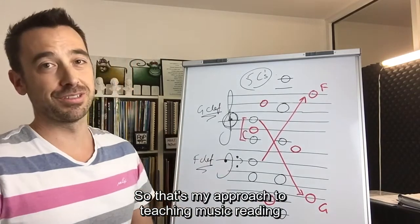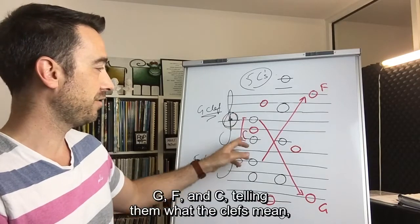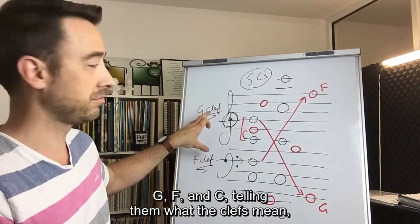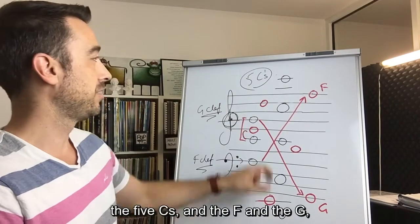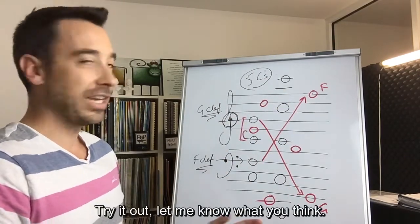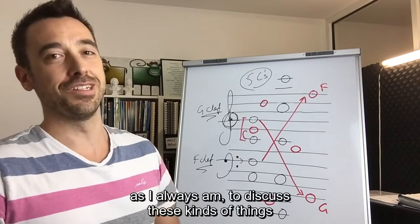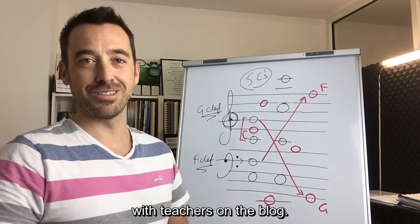So that's my approach to teaching music reading using guide notes—G, F, and C, telling them what the clefs mean, the five Cs, and the F and the G, the top and the bottom lines of the stave. Try it out. Let me know what you think. See how it goes, and I'll be really interested, as I always am, to discuss these kinds of things with teachers on the blog.